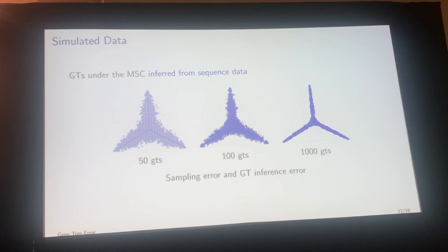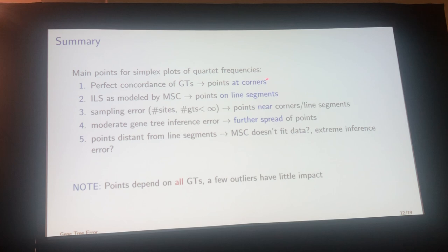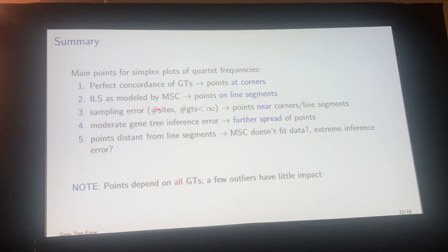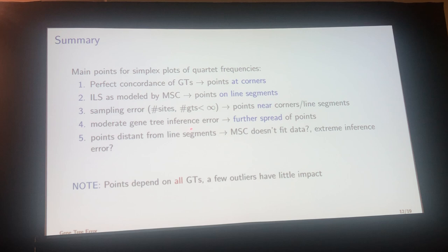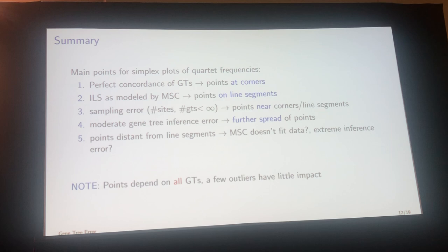To summarize: if I had perfect gene trees, I would see points only at the corners. If I have ILS, I expect points on the line segments. Sampling error from finite sites or finite gene trees causes points to spread out a bit. Moderate gene tree inference error should cause further spread of the points. And if I have any points far from the line segments, that's an indication that the MSC doesn't fit or I have really big problems with inference error.